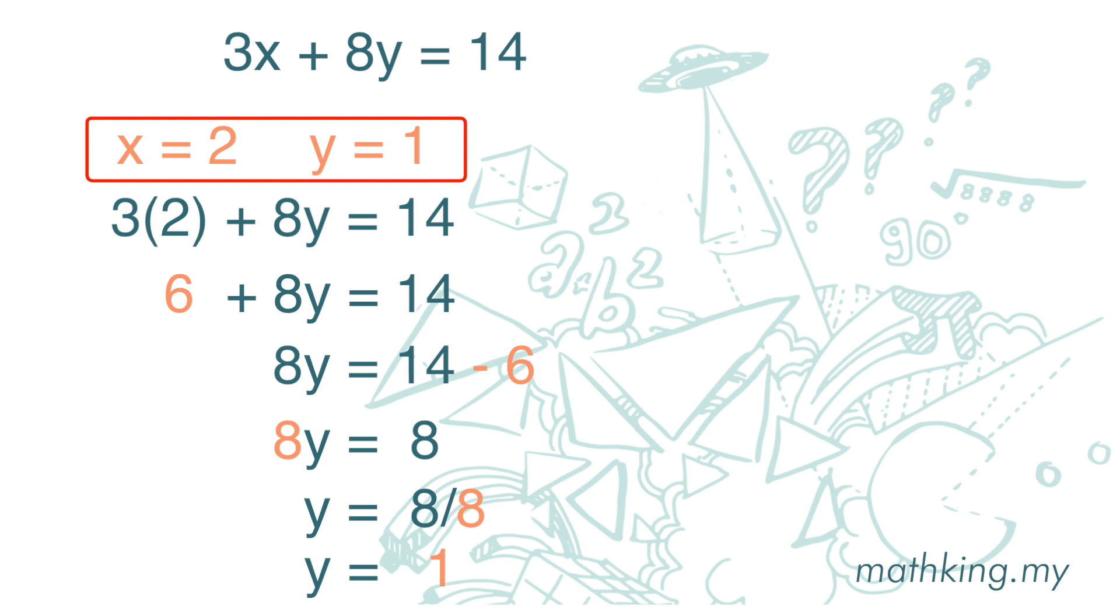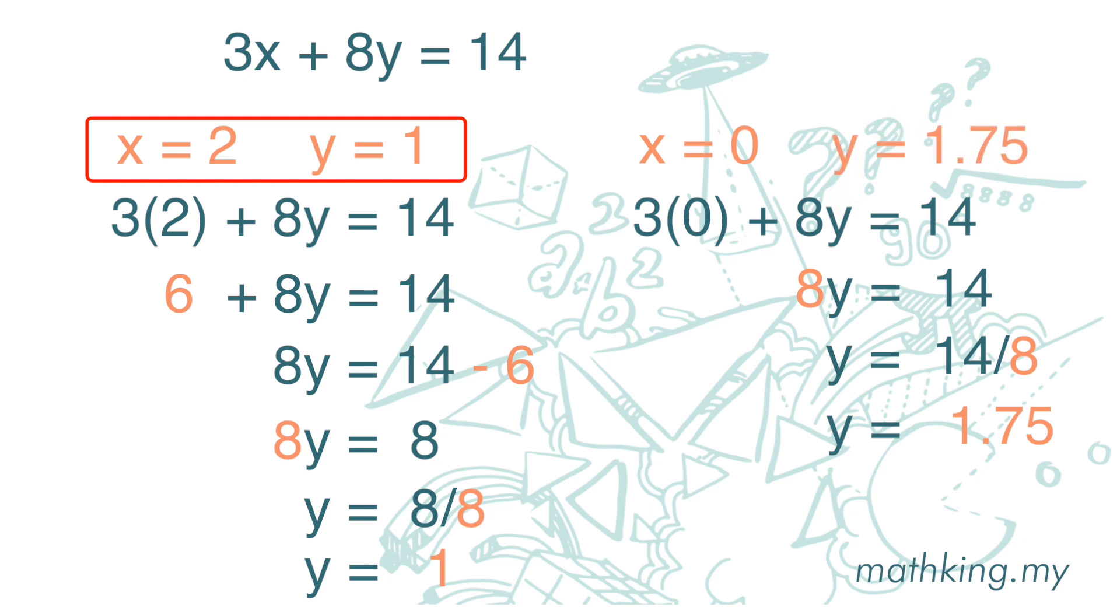How about when x is 0? We substitute 0 for x in the equation, and we get 8y = 14. Multiply by 8 when moved to the other side becomes divided by 8. 14 divided by 8 is 1.75. So when x is 0, y is 1.75.